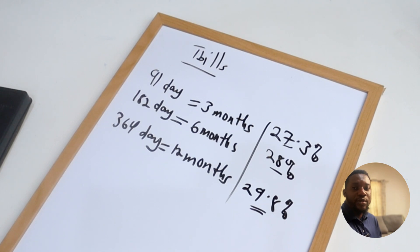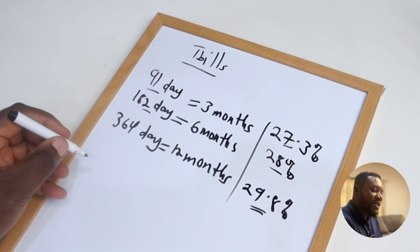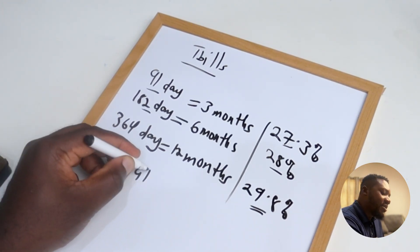Because the rates that you are seeing here, 27.3 or the 28, is not what you're going to get at the end of your 91 day investment or your 182 day investment.